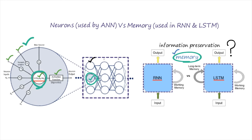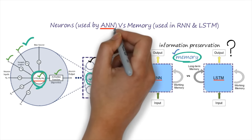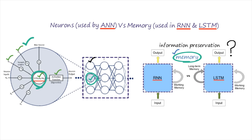The basic difference between ANN, RNN, and LSTM is that ANN uses neurons, which have a very less amount of information retention capability. RNN and LSTM both use memory cells, and these memory cells can preserve a large amount of previous sequence of information that can be useful to predict the future.